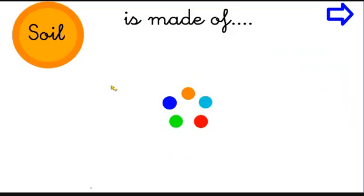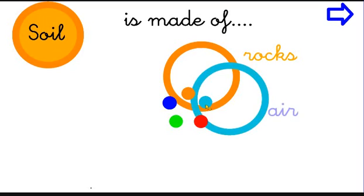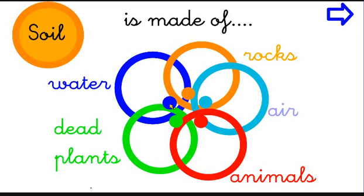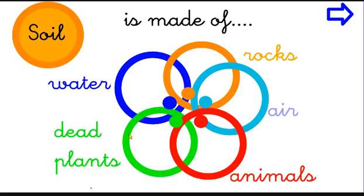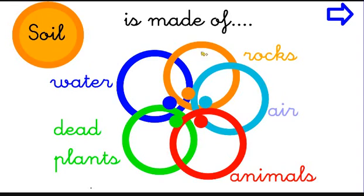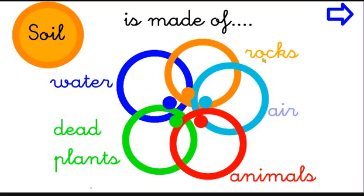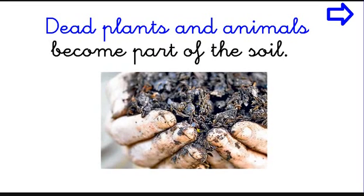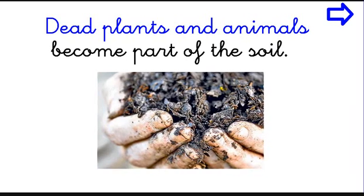Let's have a look at the soil. The soil is made of rocks, air, animals, dead plants, and water. So the soil is made of all these things — it's not just rocks or sand. There are a lot of things in it. When plants and animals die, they become part of the soil. Here in the soil you can see a little bit of plants, a little bit of animals, dead animals.